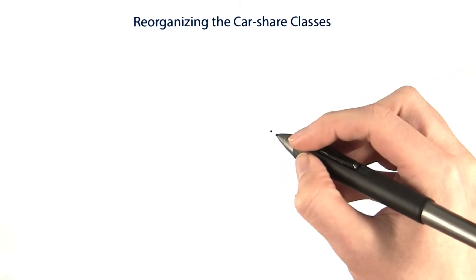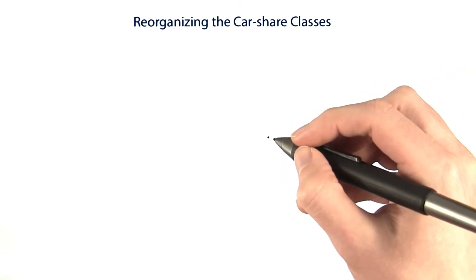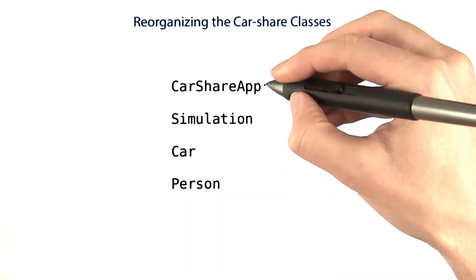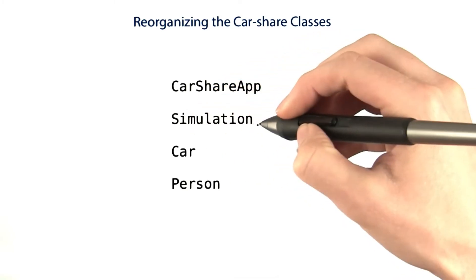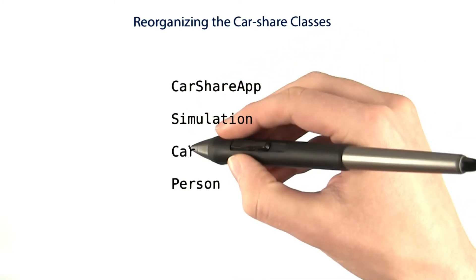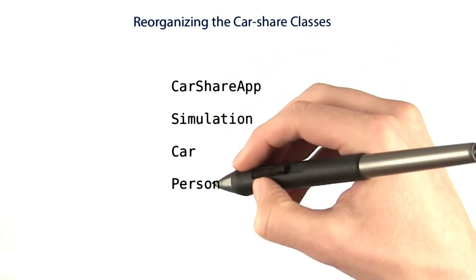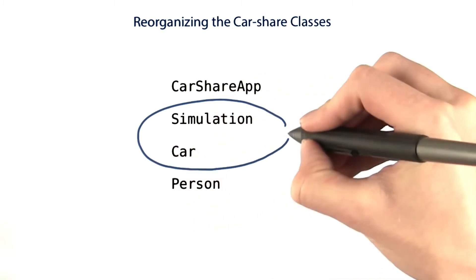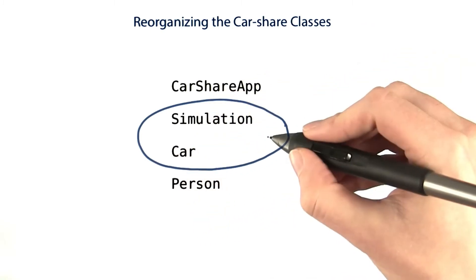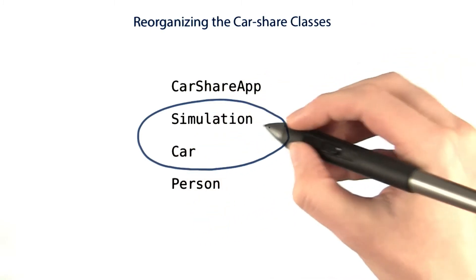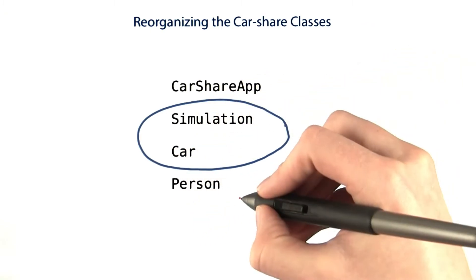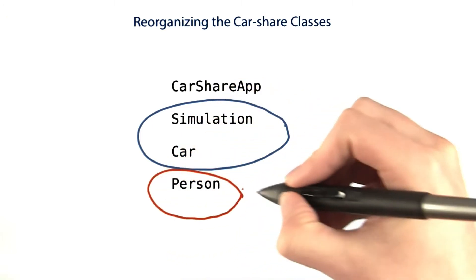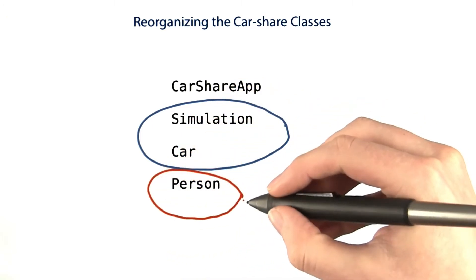For the car share app, we created four classes: the car share app, which used the simulation, which used cars and persons. The simulation and car classes go together and are specific to the car share app. The person is more general and could possibly be used for other situations.